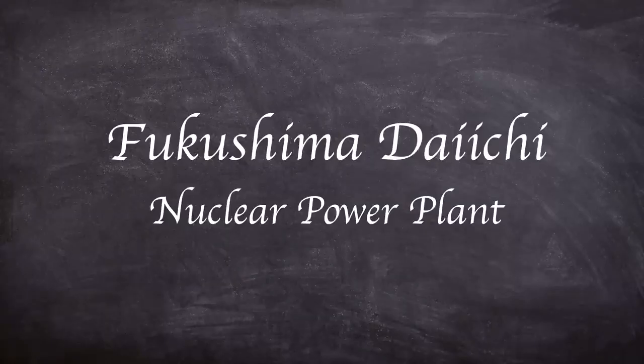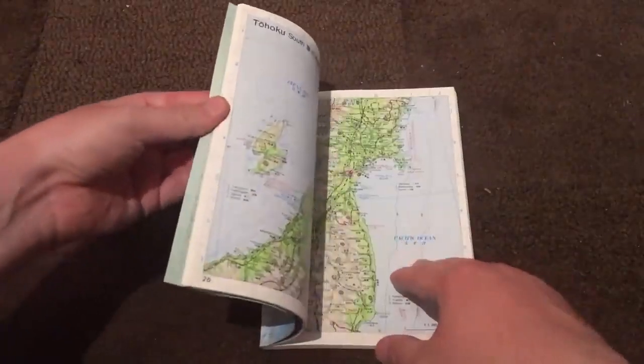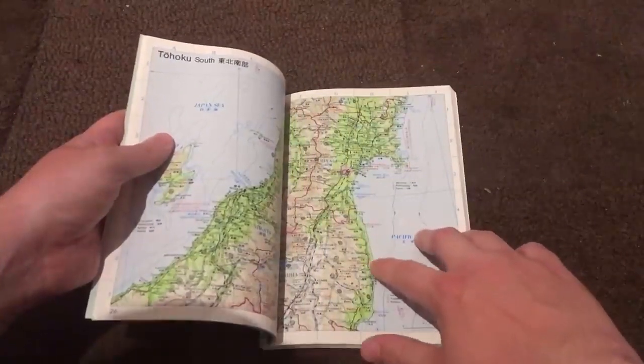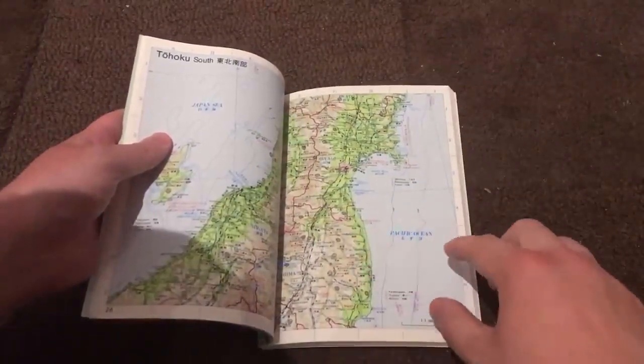The Fukushima Daiichi NPP site lies approximately 220 kilometers north of Tokyo. At almost the midpoint of the Pacific coast, it straddles Okuma and Futaba Townships in Fukushima Prefecture, which is around here on a map.